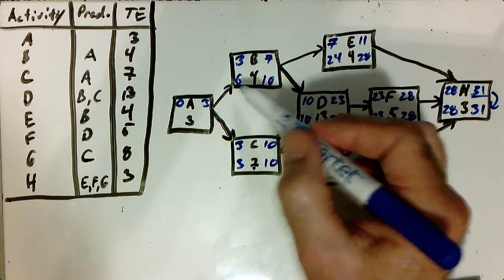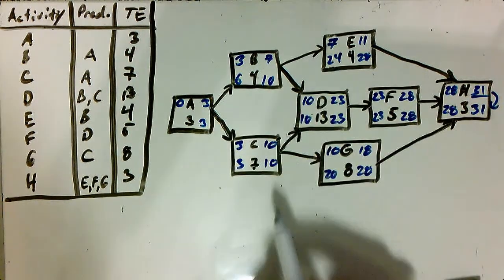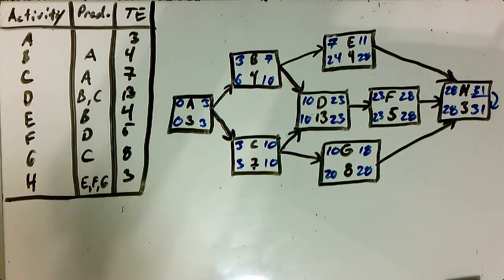And again, now we have to choose between the six and three. Which one's smaller? The three. So the three goes there. Three minus three is zero. So now we've done a full backward pass.